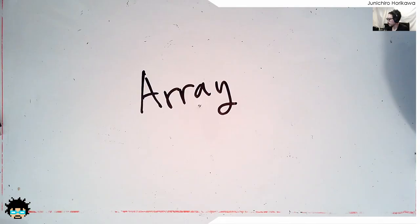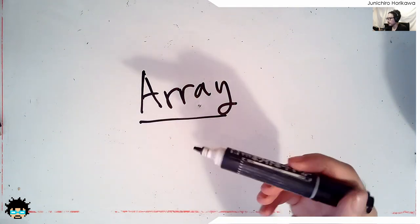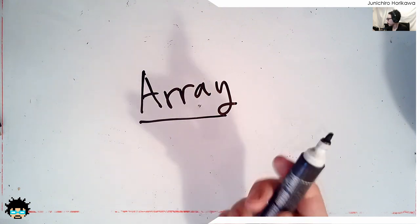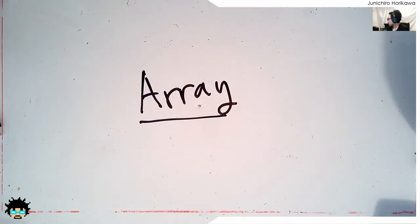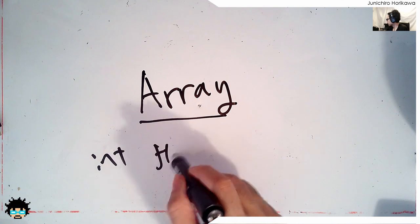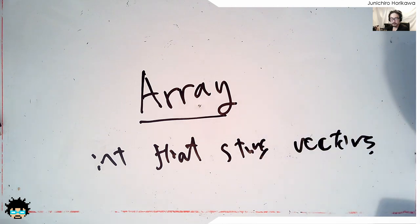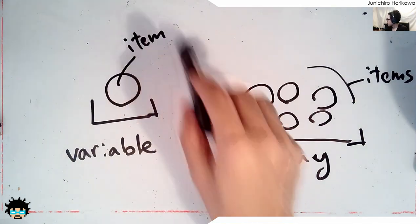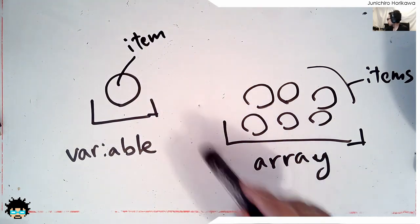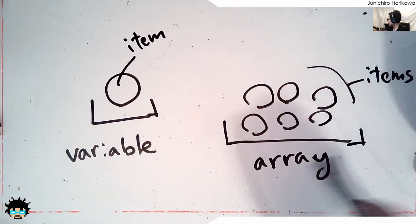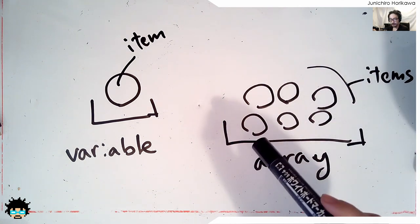First, let me explain what an Array is. Previously, we looked into variables, which were a container that can contain a single item. Compared to that, an Array is a container that can contain multiple items. Diagram-wise, a variable is a container for a single item, and an Array is a container which can contain several multiple items in one container.